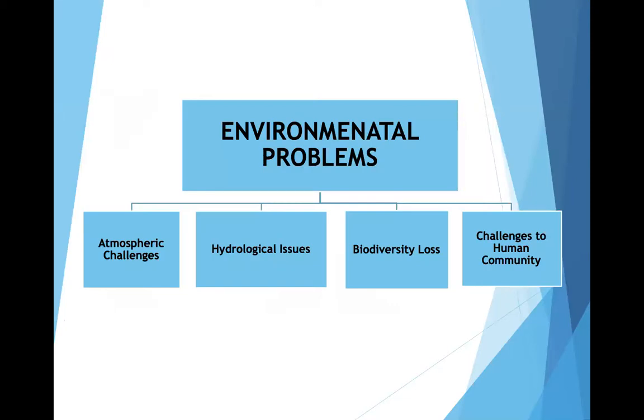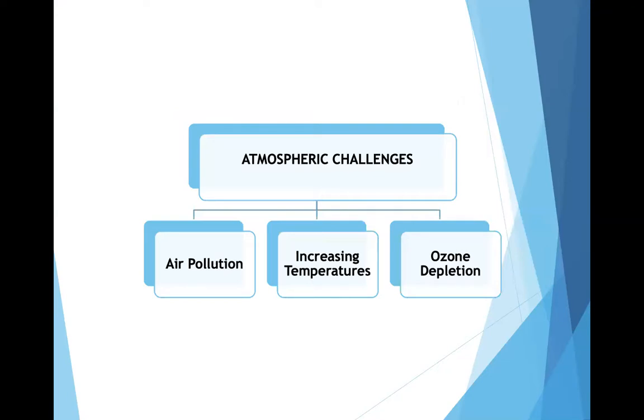Environmental problems are categorized into four areas: atmospheric challenges, hydrological issues, biodiversity loss, and challenges to human community. Regarding atmospheric challenges: air pollution is a very important area of concern. The levels of air pollution are so high in the Arctic that Arctic haze has become a major issue. The haze aerosols are mainly sulfurous, originating from combustion of fossil fuel in Europe and Asia. Radionuclides are also traced as fallout of nuclear testing. Some persistent toxic substances travel through air masses and become long-distance contaminants. Due to harsh climate conditions, the polar regions create a sink for these substances, such as POPs — persistent organic pollutants.